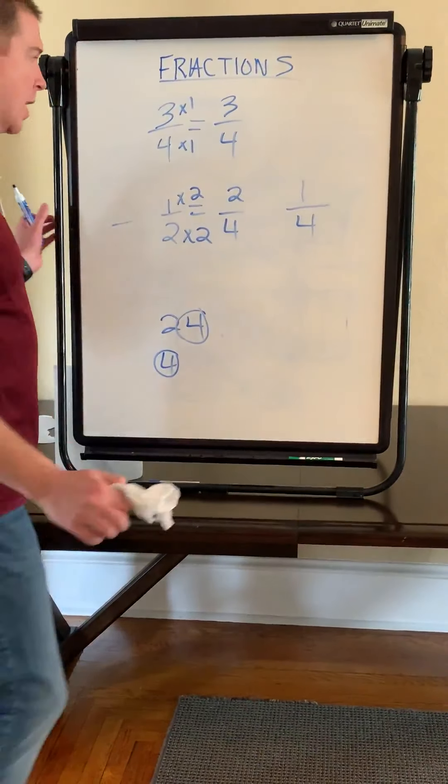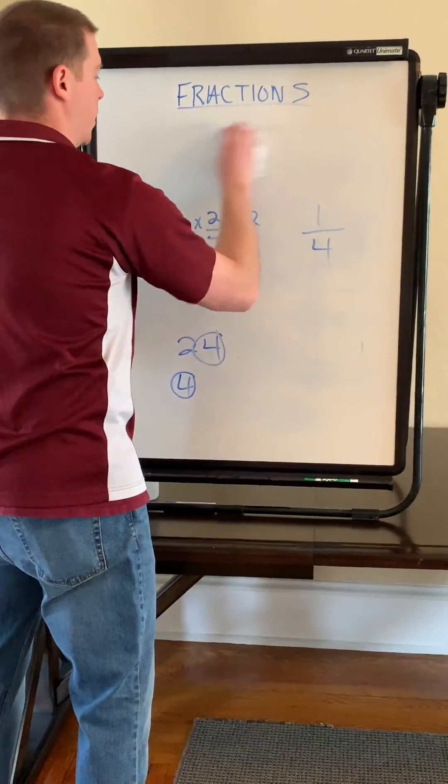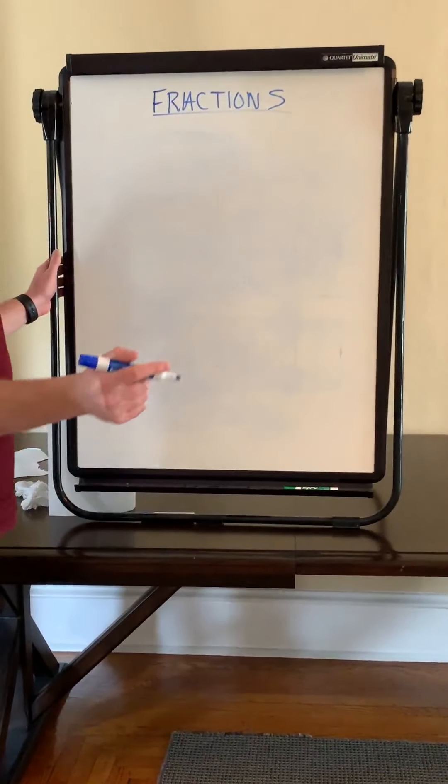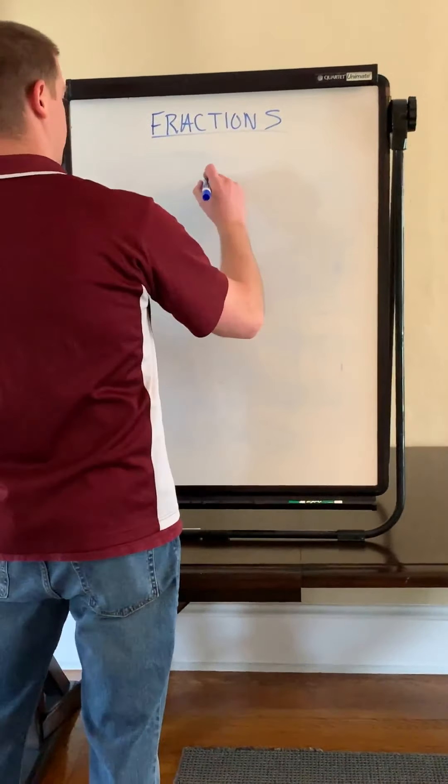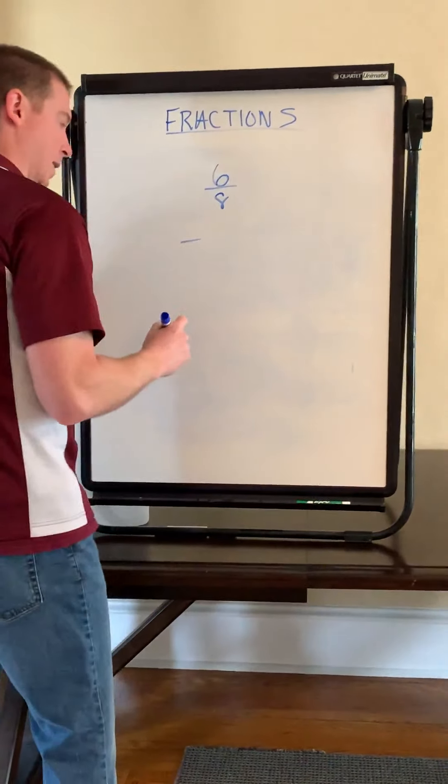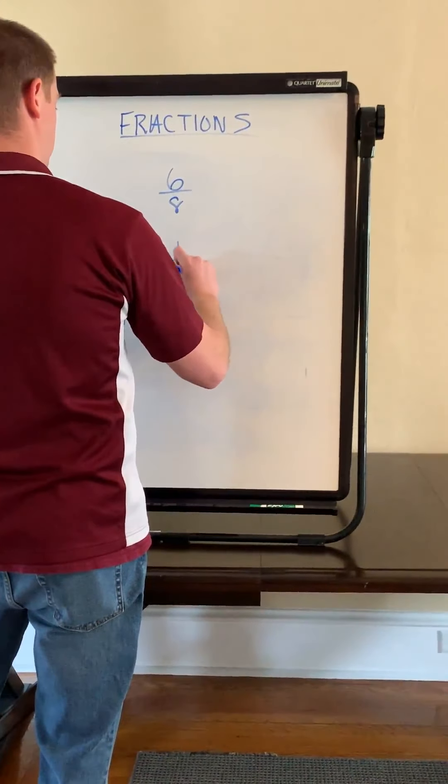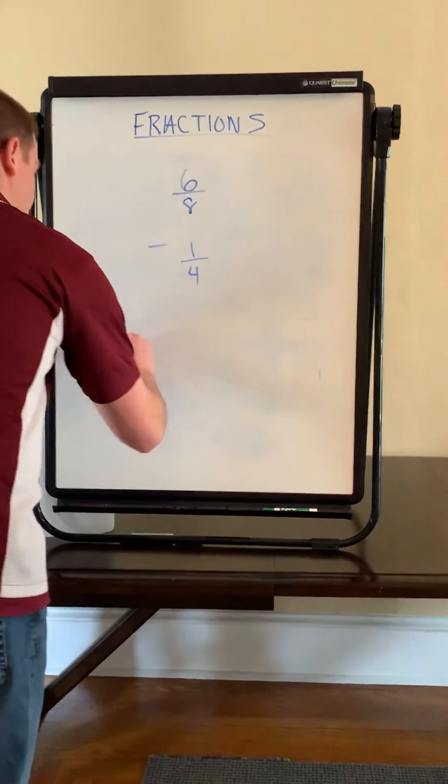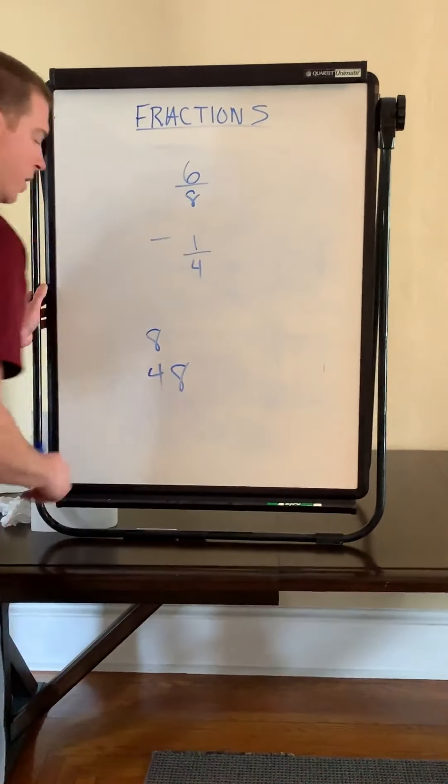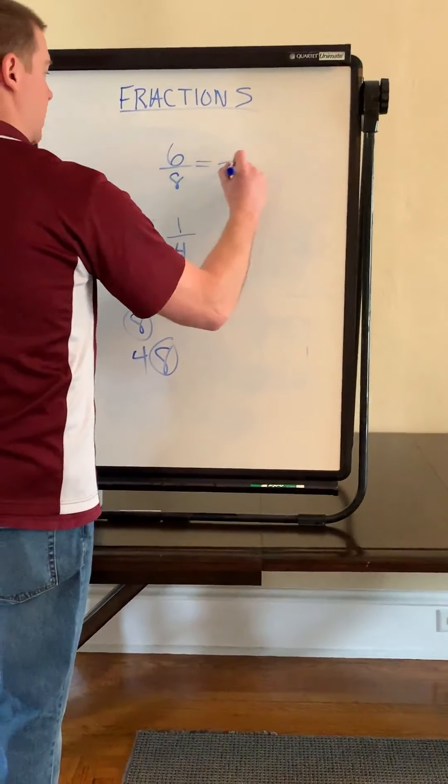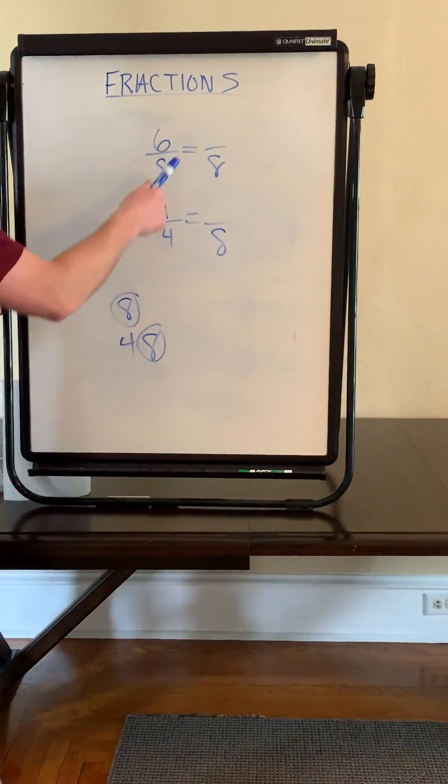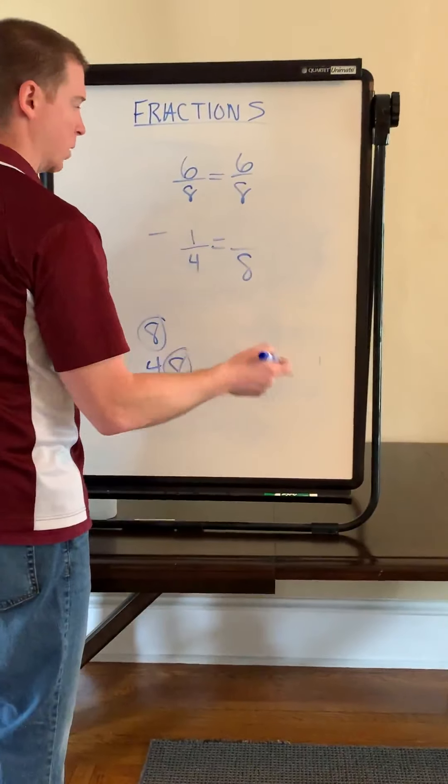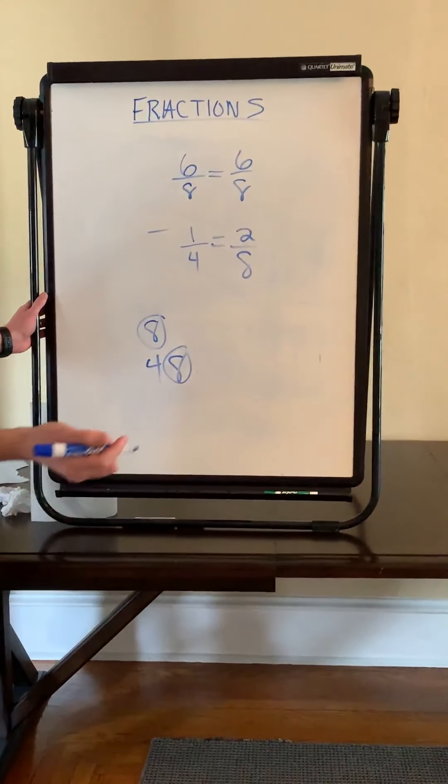Let me give you one more subtraction problem, and then we are going to move on. All right, last subtraction problem. Let's say we have 6/8 minus 1/4. Okay, same thing. I need to get common denominators. So I have an 8 and a 4. I start counting for 8. My new denominator is 8. All right, how do I go from 8 to an 8? Times 1. 6 times 1 is 6. How do I go from a 4 to an 8? Times 2. 1 times 2 is 2. 6/8 minus 2/8 is 4/8.